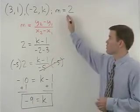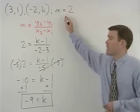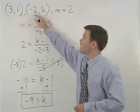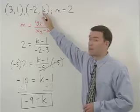And negative 9 equals k. So if our line has a slope of 2, it must pass through the points 3, 1 and negative 2, negative 9.